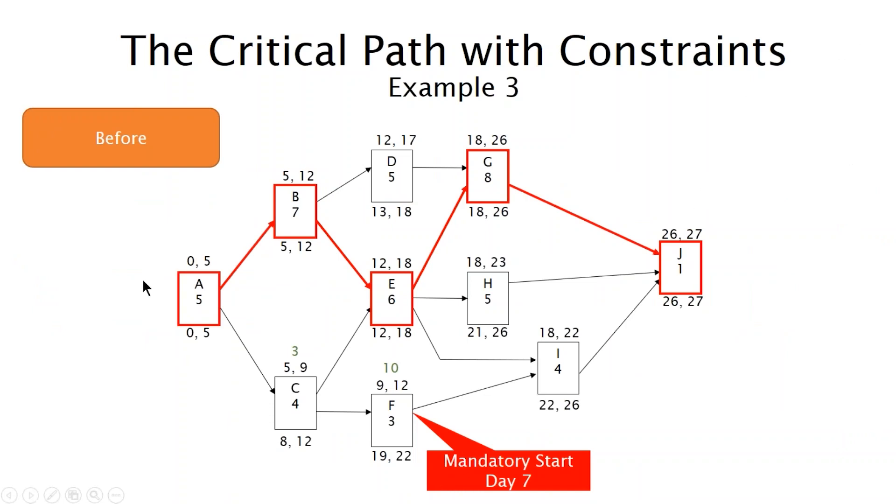Third example. Mandatory start day 7. So this activity is currently starting on day 9, has 10 days afloat, and I'm saying mandatory to start this activity on day 7. Hard constraint. Let's see what happens. We've broken this relationship as a result of applying that constraint. Whereas day 9 here, the finish of C was driving the start of F, but no longer. In fact, these two activities are now overlapping, and there is no total float for this activity. Total float has gone to zero. So this activity would show up, even though it's not in the path of the critical path, but it would show up as a critical activity.